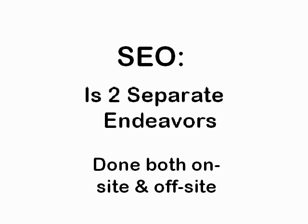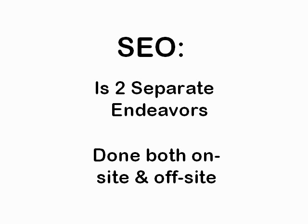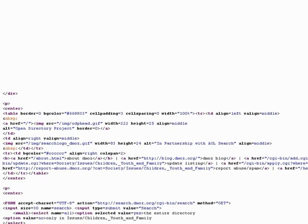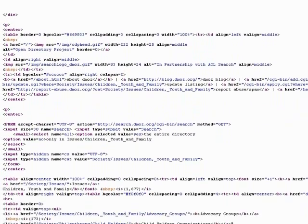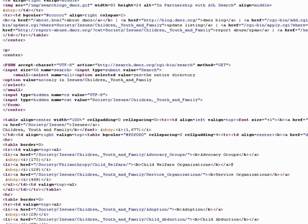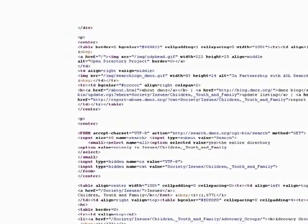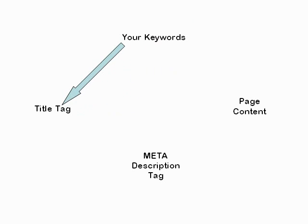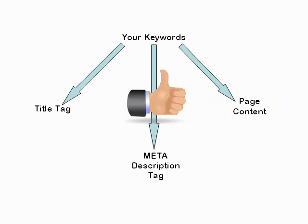Any good SEO campaign will pay attention to both sides of the equation, otherwise the efforts may fall flat. This means the site will first make sure its HTML code, including any that's generated by web applications, is both well written and includes detailed descriptions of what each page of the site is about. This information is usually in the title tags, meta description tags, and of course in the content itself.